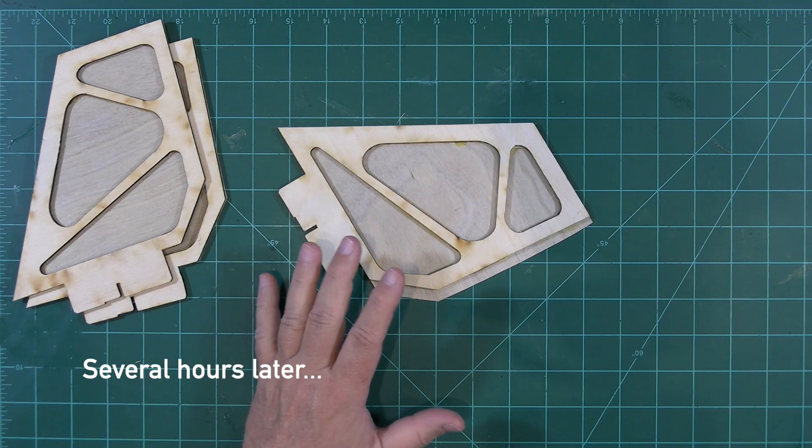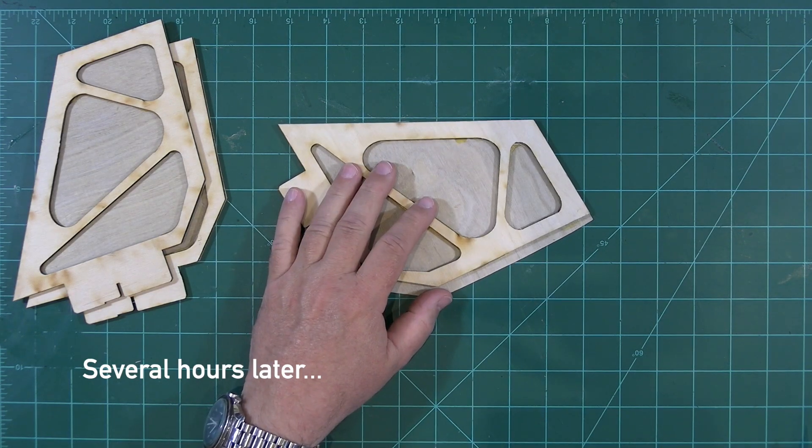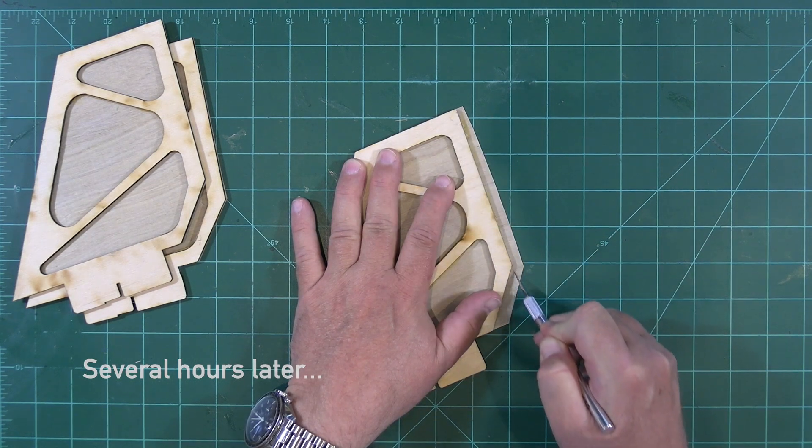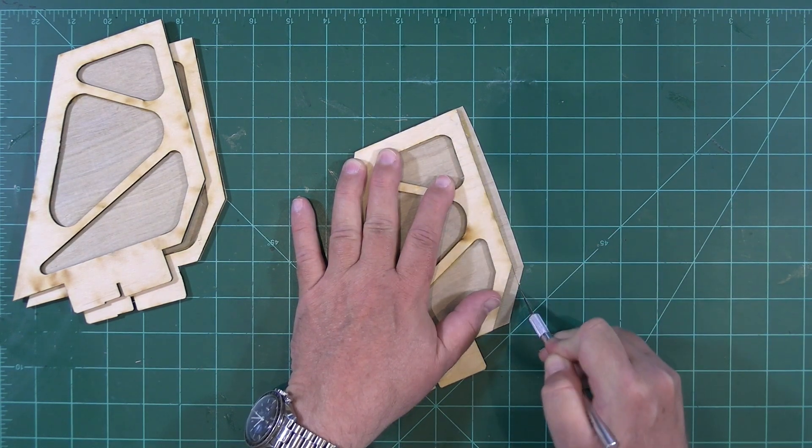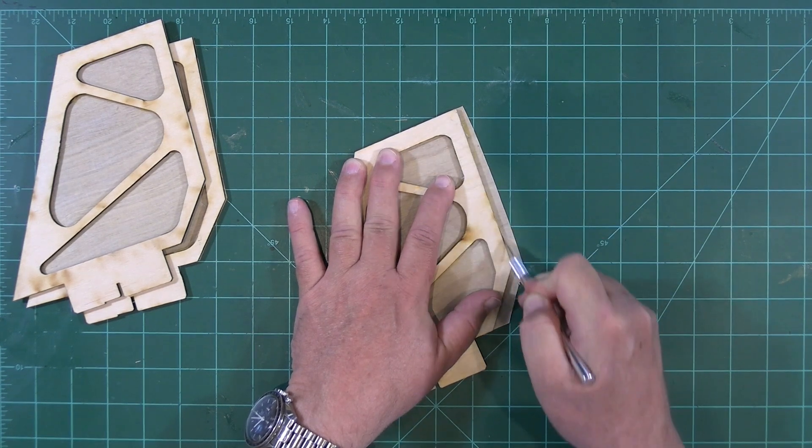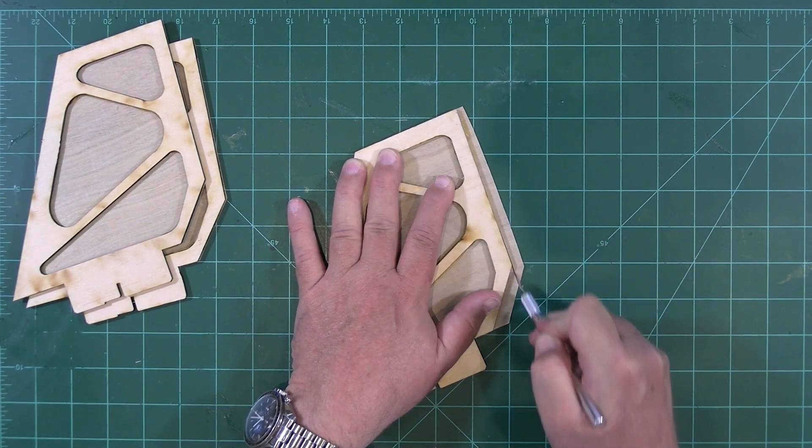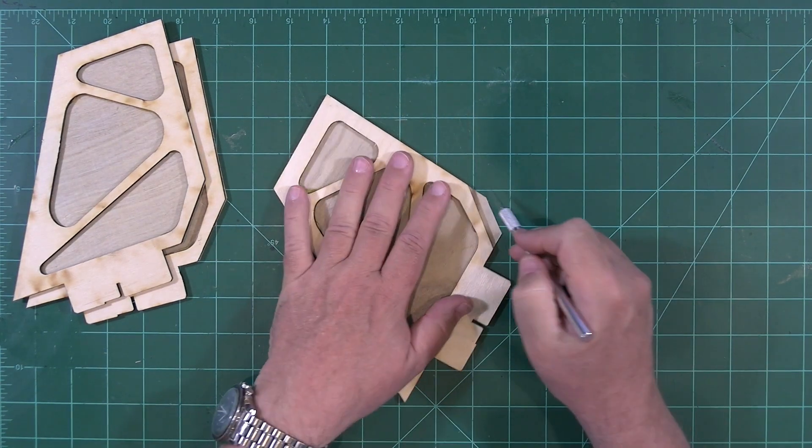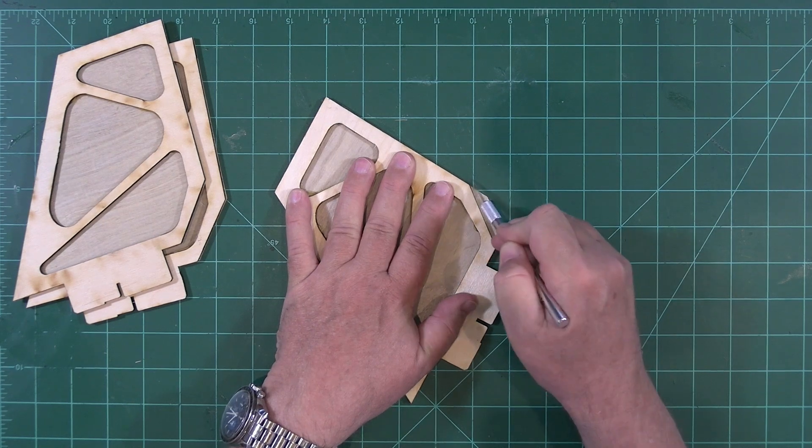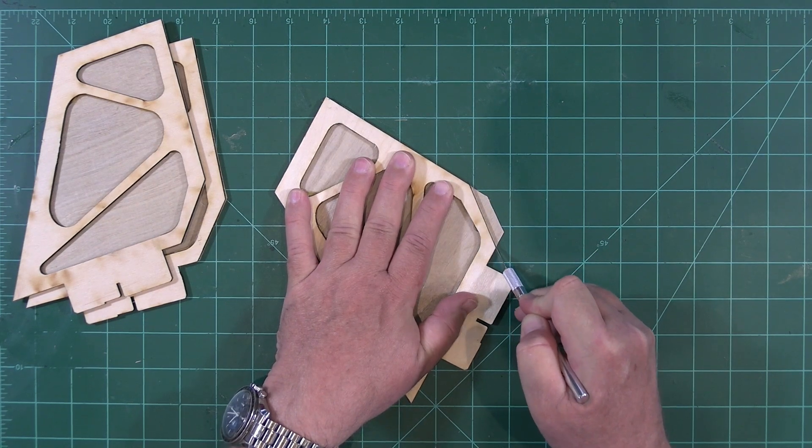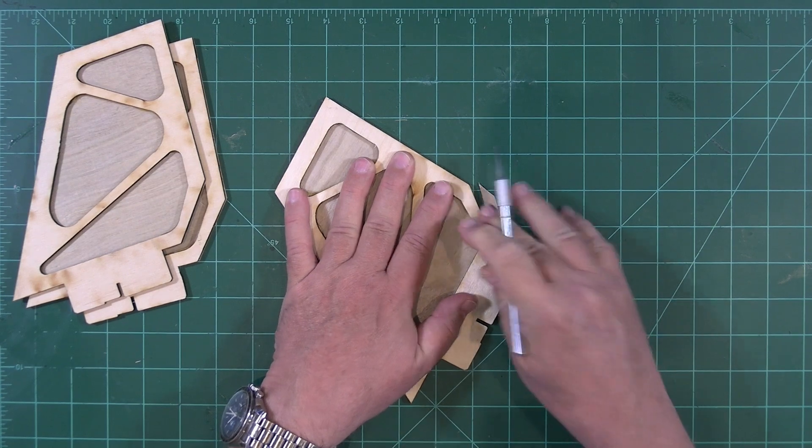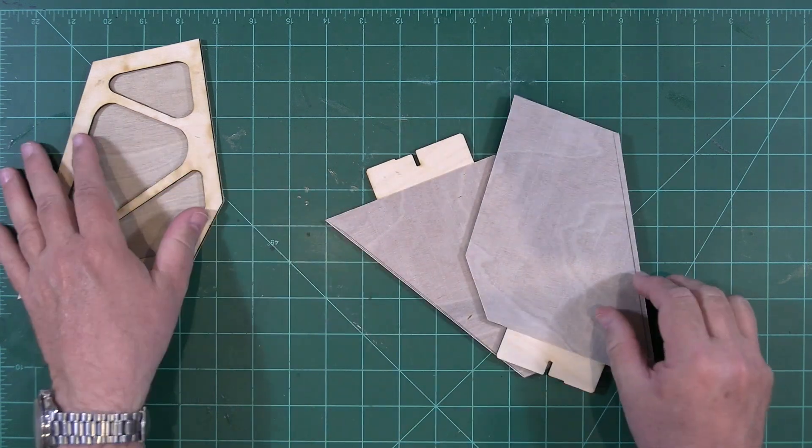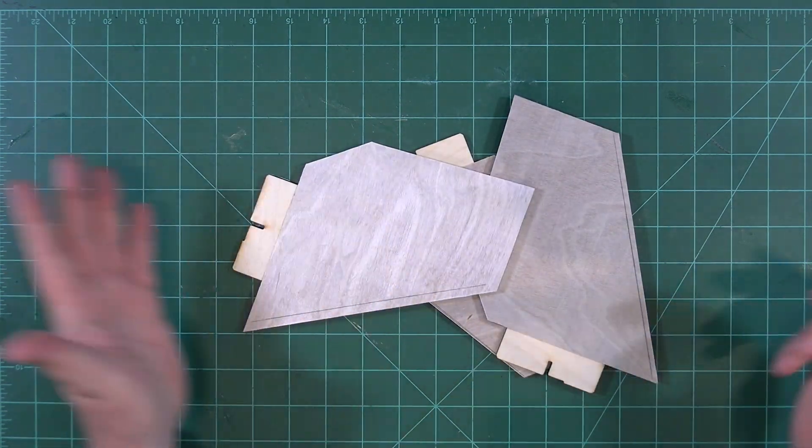Okay, the glue has dried and we've had an opportunity to unstack everything. And we're in the process now of trimming the excess plywood from the side we've already glued up. There we go.